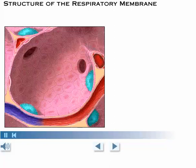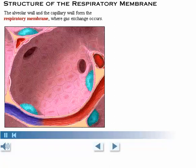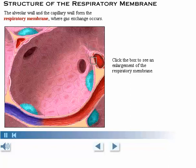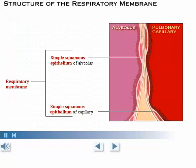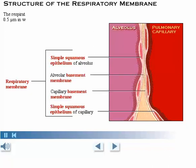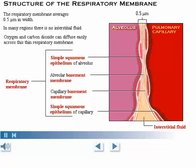Now let's examine the wall of an alveolus and the wall of a capillary. Together, these walls form the respiratory membrane, where gas exchange occurs. The respiratory membrane is made up of two layers of simple squamous epithelium and their basement membranes. This membrane is extremely thin, averaging 0.5 micrometers in width. In many regions of the membrane, there is no interstitial fluid, because pulmonary blood pressure is so low that little fluid filters out of the capillaries into the interstitial space. Oxygen and carbon dioxide can diffuse easily across this thin respiratory membrane.